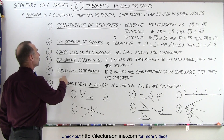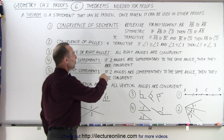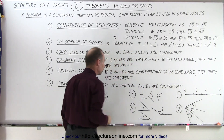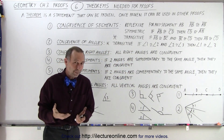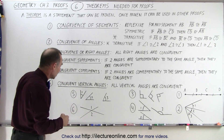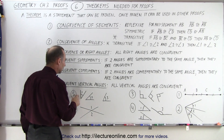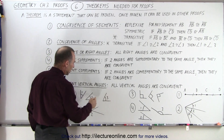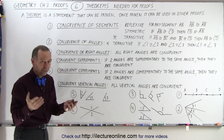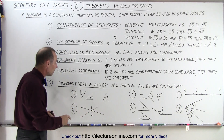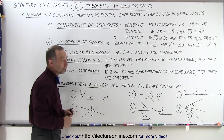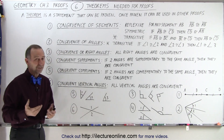Theorem 5: congruent complements. If two angles are complementary to the same angle, then they are congruent. It works the same way as supplementary angles. If angle 1 is complementary to angle 3, and angle 2 is complementary to angle 3 — meaning the sum of the two measures adds up to 90 degrees — then angle 1 must be congruent to angle 2. They must have the same angle measure.